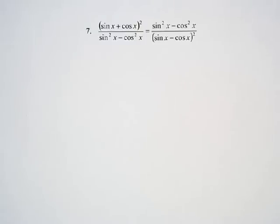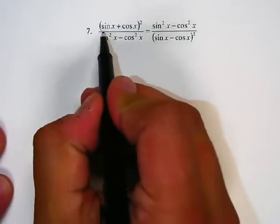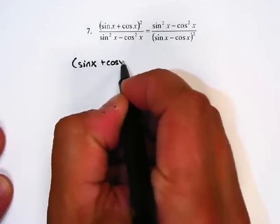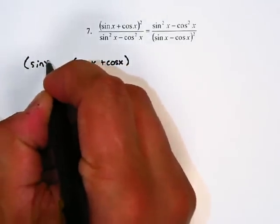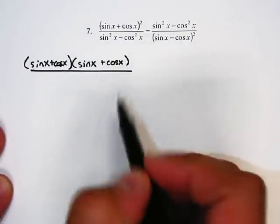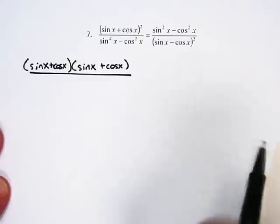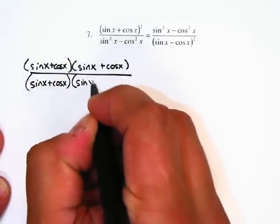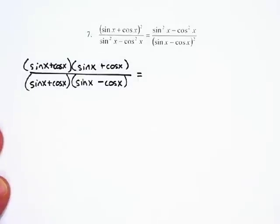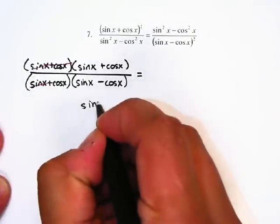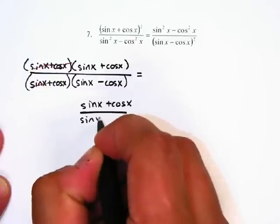With this one, I'm going to work both the left side and the right side, trying to factor and cancel things out. On the left side, we have sine of x plus cosine of x, quantity squared, over sine squared minus cosine squared. I write the numerator as sine of x plus cosine of x, times sine of x plus cosine of x. The denominator, sine squared minus cosine squared, is a difference of perfect squares, so I can write it as sine of x plus cosine of x, times sine of x minus cosine of x. Now I can cancel the sine of x plus cosine of x on top and bottom, and I have sine of x plus cosine of x over sine of x minus cosine of x.